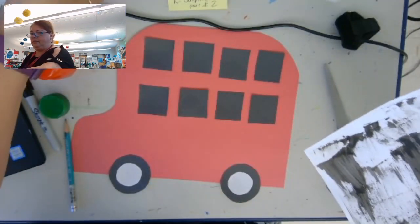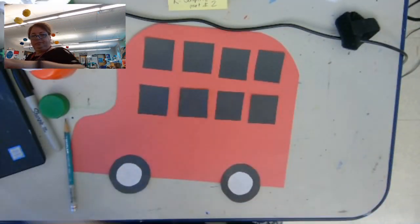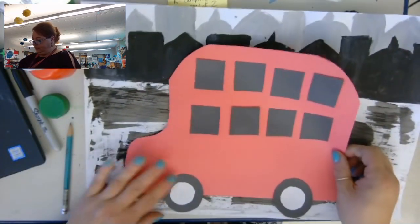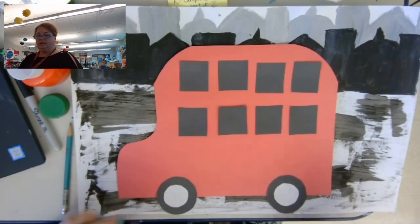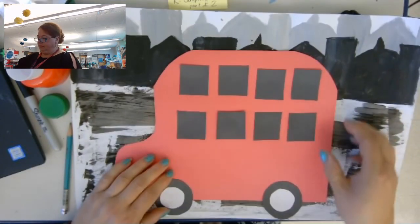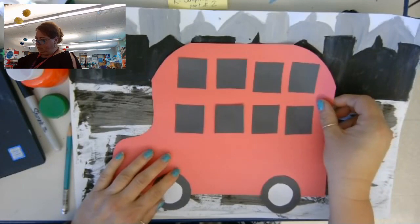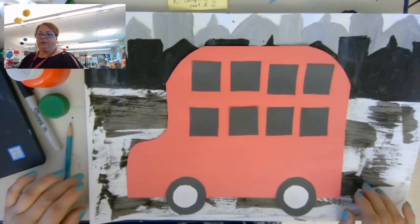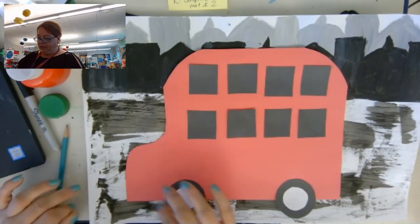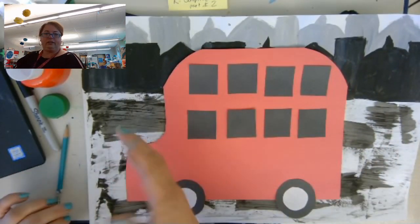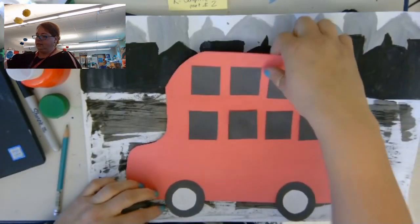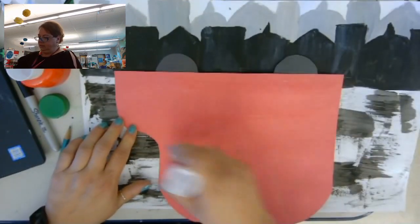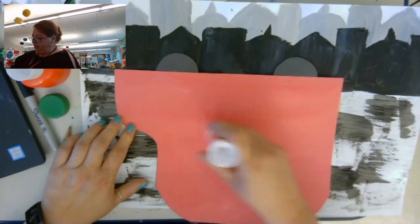Now I'm going to get my background. The bus is going to get glued right at the front, at the bottom, and you can see the city behind it. If you wanted to, you could maybe add a couple people or you could add a sign here like a stop sign. That's up to you. So I'm going to go ahead and glue my bus onto my background.